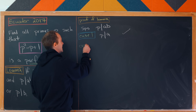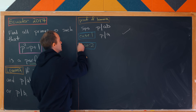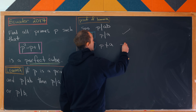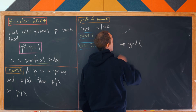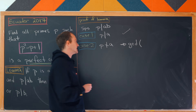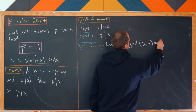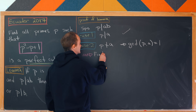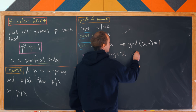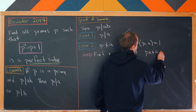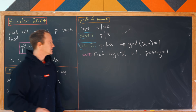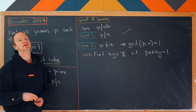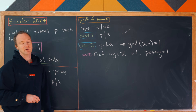The second case is a little bit more interesting: the case when p does not divide a. If p does not divide a, then the greatest common divisor, the GCD, of p and a is equal to one. Now we're going to use Bézout's lemma to find integers x and y such that p·x plus a·y equals one. Bézout's lemma says that the GCD of two integers can always be written as a linear combination of those integers, which is exactly what we've done here.